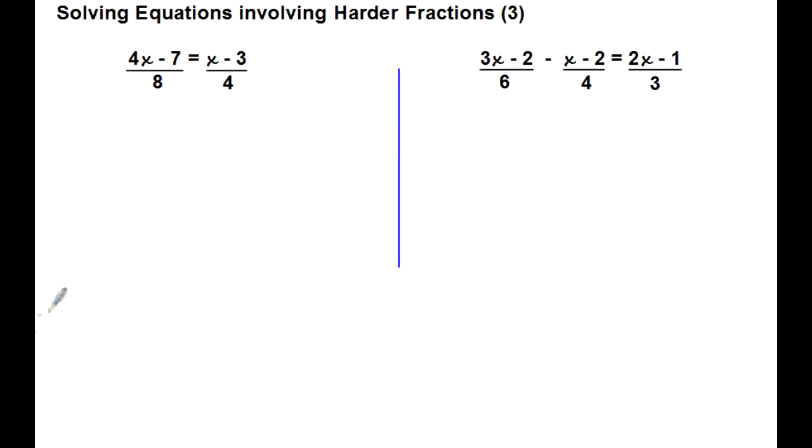Okay, solving equations involving harder fractions. This is the third level of difficulty. We've got more than one fraction involved, and in this case we've got three fractions with different denominators. What we need to do first of all, the strategy must be to find the lowest common multiple of our denominators, or lowest common denominator, and then multiply both sides by this.